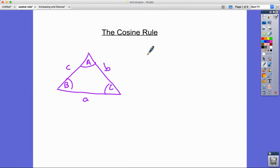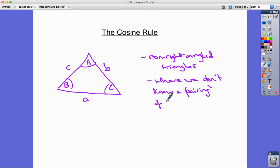Now the cosine rule can be used to find side lengths or sizes of angles. The difference with the sine rule is that we use the cosine rule for non-right-angled triangles where we don't know a pairing. If I actually know a pair of an angle and a side length, then we use the sine rule. But if we don't know a pairing of side length and angle, we use the cosine rule.